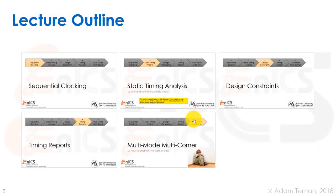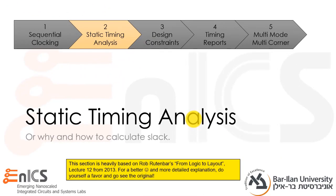Now that we remembered what sequential clocking is and defined the different types of parameters of a flip-flop and the two basic timing paths that we're going to check, we can move over to some algorithms of static timing analysis — why and how to calculate slack. This section is heavily based on Rob Rutten-Barrs' 'From Logic to Layout' lecture 12 from 2013. If you want a better and more detailed explanation, go see the original — one of the best courses and best teachers I've ever learned from.